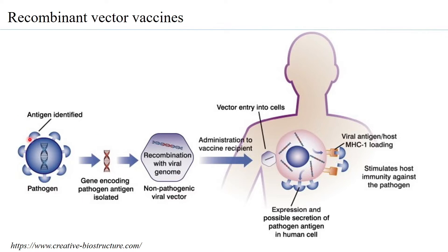For example, consider an antigen that is going to be used for immunization — the vaccine is looking to produce an immune response against this antigen present in the pathogen. What is done is that the DNA of this pathogen is isolated, the gene which gives rise to this antigen is isolated, and then this gene is incorporated into a viral genome. This is called recombination with the viral genome.